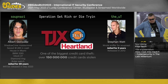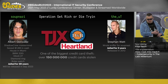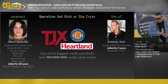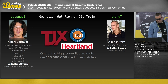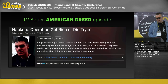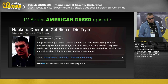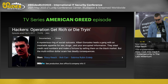Gonzalez had a lot of money — a house in Miami, a BMW, a Glock, diamond-encrusted Rolex watches — and was jailed for 20 years, set to be released this September. The Unix Terrorist's real name is Steven Watt, who created a sniffer for Gonzalez and was jailed for two years. All these events are described in detail in the TV series American Greed, episode 'Operation Get Rich or Die Trying.'